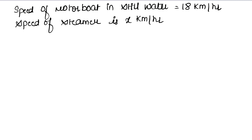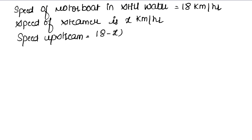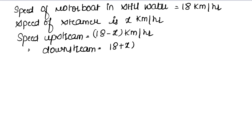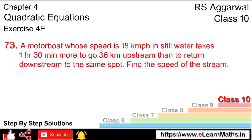Now we have to write the upstream and downstream speeds. Upstream speed is 18 minus x km per hour. Downstream speed is 18 plus x km per hour, because speed increases when the boat moves along the stream.